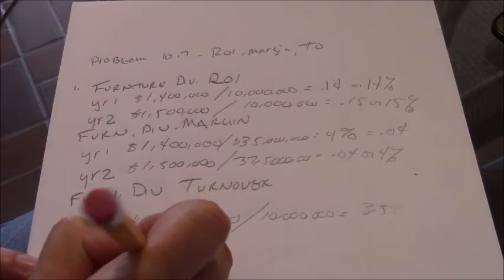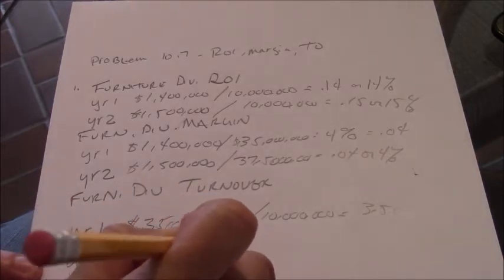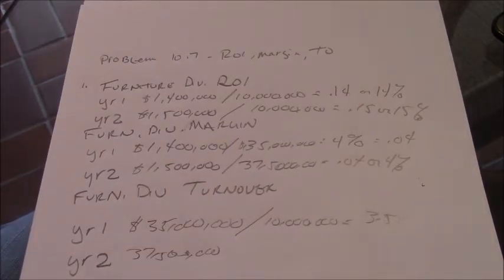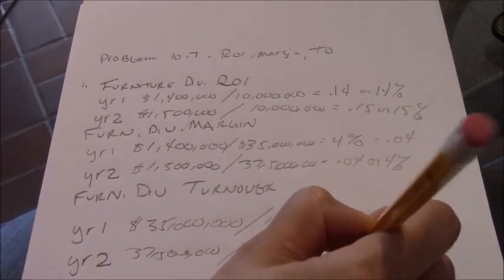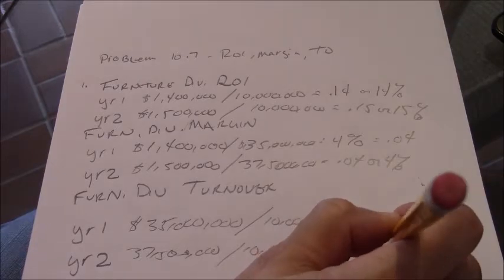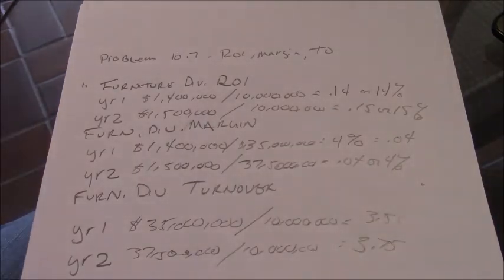So year 2, we've got our 37,500,000 divided by our same 10 million. And we're turning over a little better, right? 3.75.